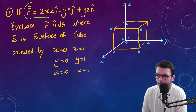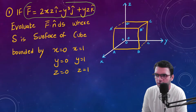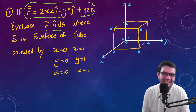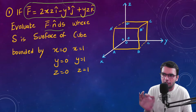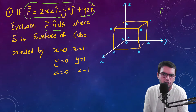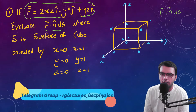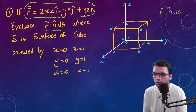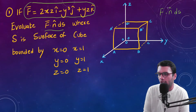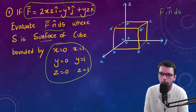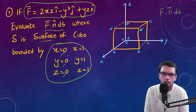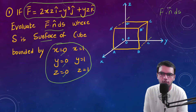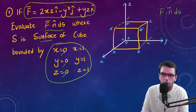I have been given a function and I want to evaluate the surface integral F dot n dS. The definition of surface integration is the dot product of the vector function with the normal vector to some surface. We need to evaluate this where S is the surface bounded by the given points — the origin where x, y, z are all 0, up to x=1, y=1, z=1 — essentially a unit cube.